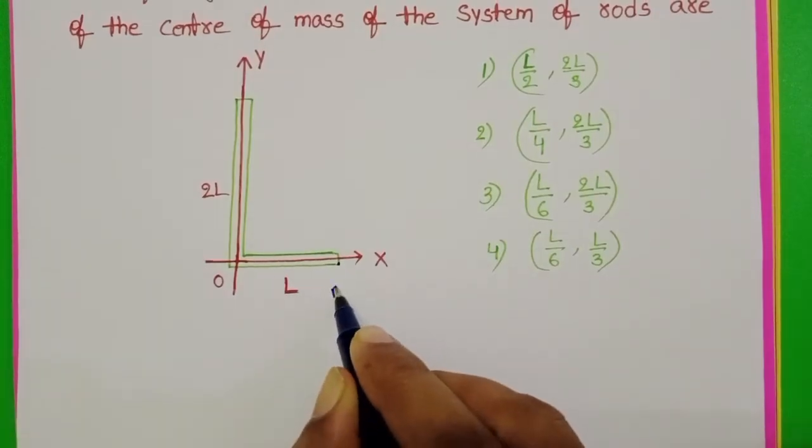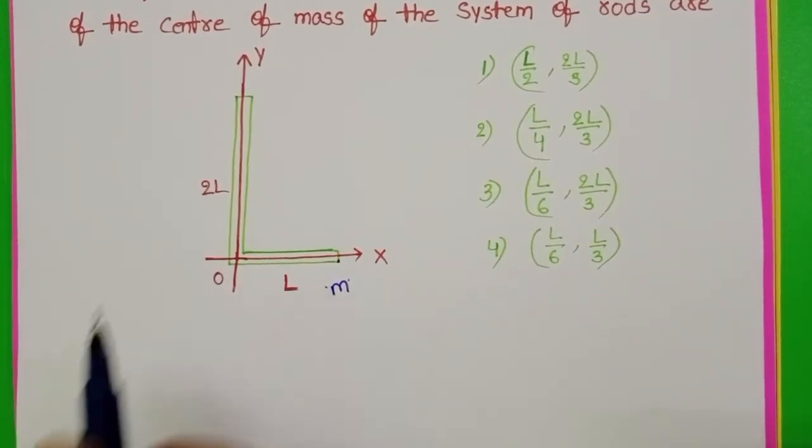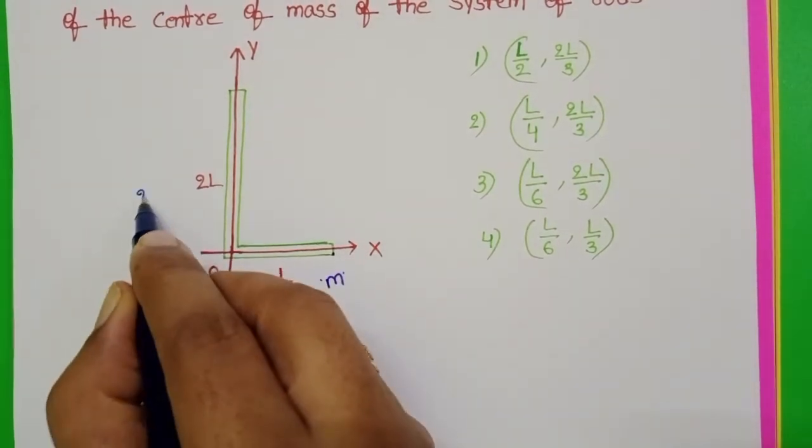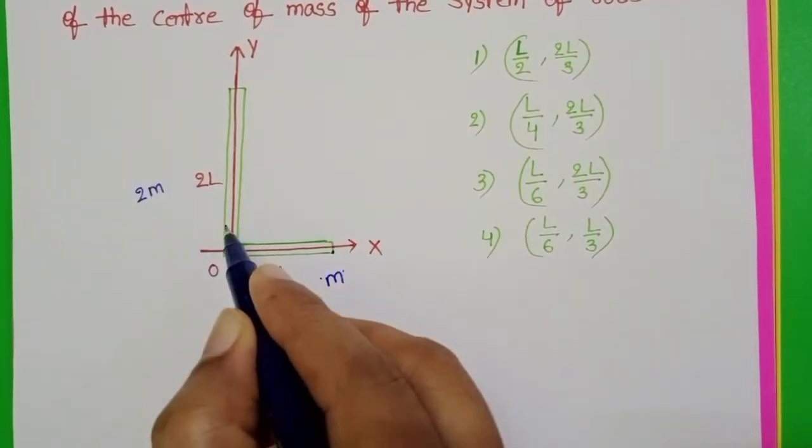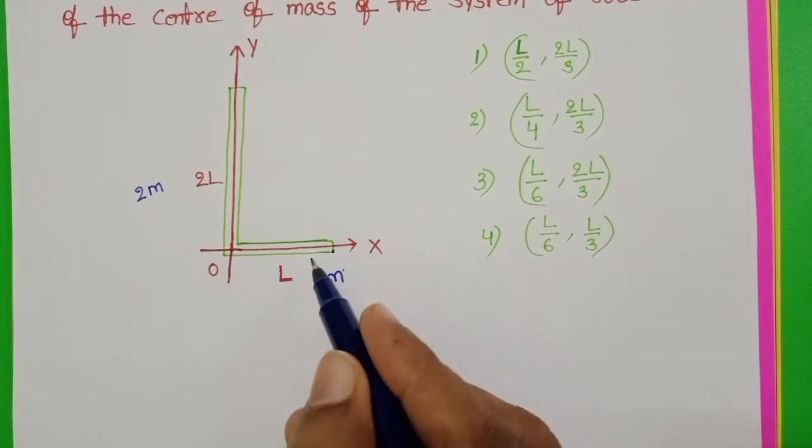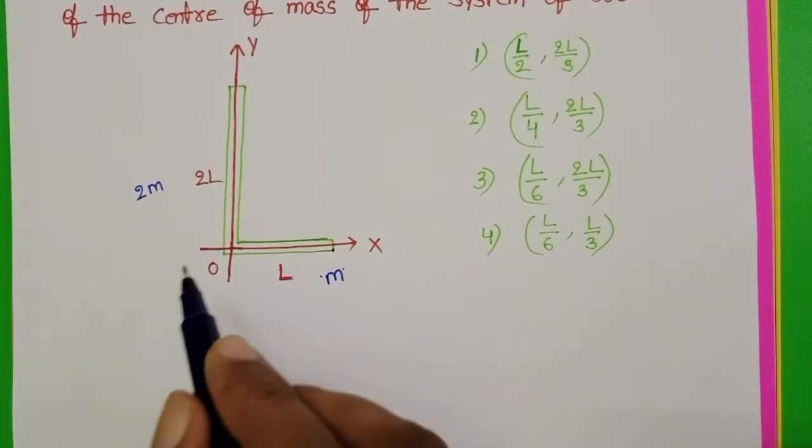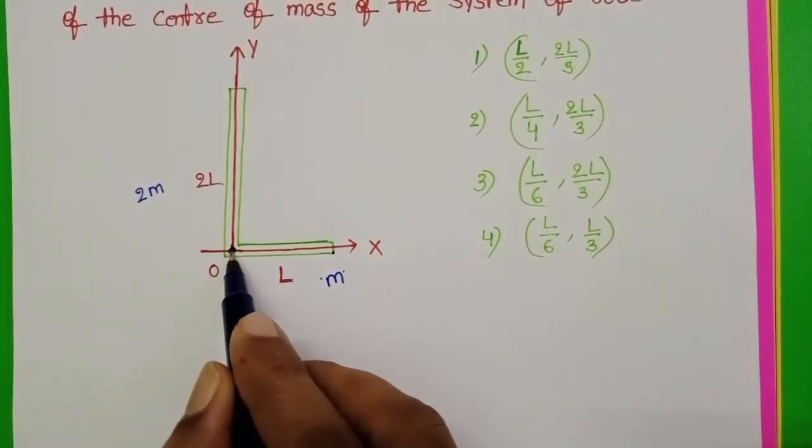Let us take mass of the first rod is M and mass of the second rod is 2M. Why? Because the length of the second rod is exactly double the length of the first rod. This point is at origin.